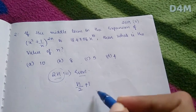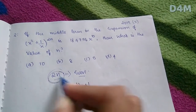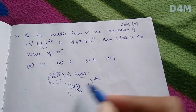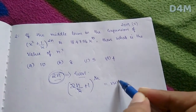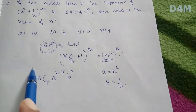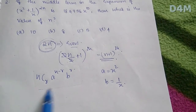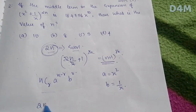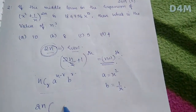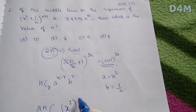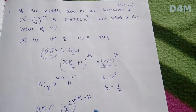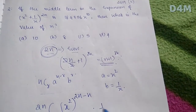We have the general term: NCR. Here we have 2n, and the binomial expression contains x². The term is x² raised to (2n - n), and 1/x raised to n. We get x raised to (4n - 2n - n) = x raised to n. Setting x raised to n equal to x raised to 10 gives n = 10.